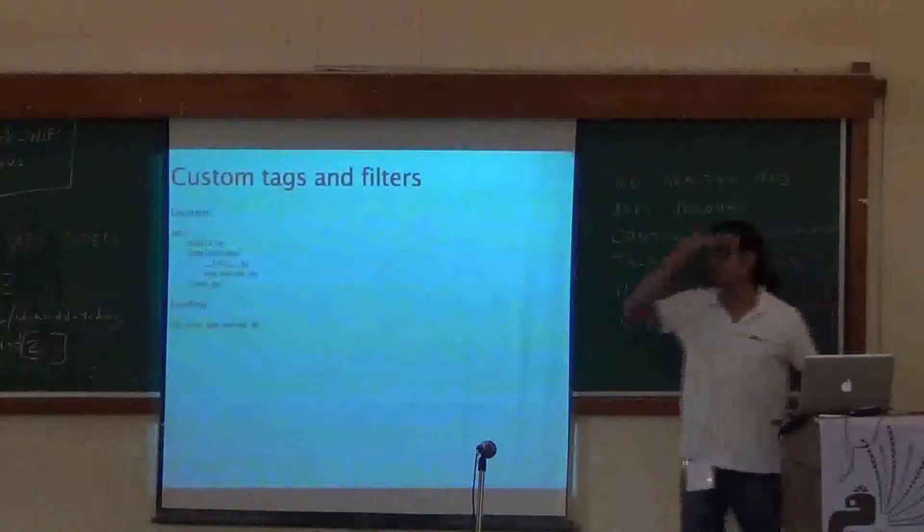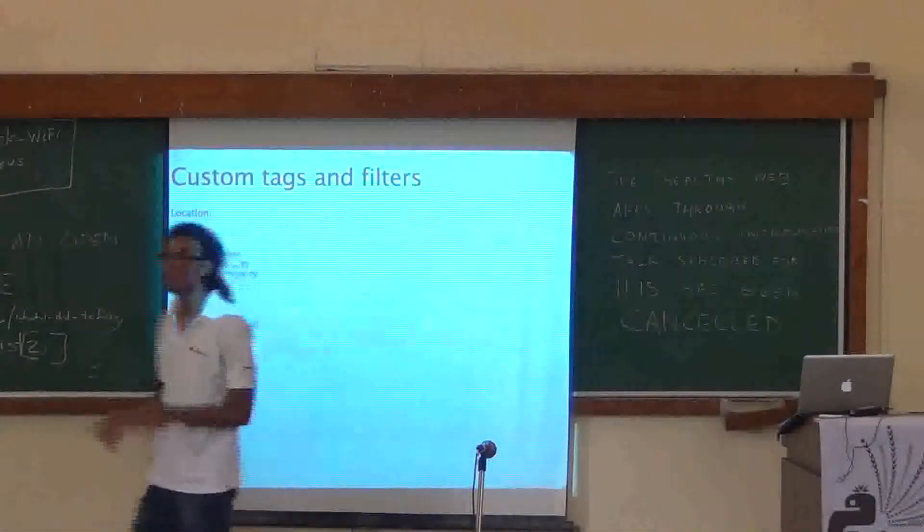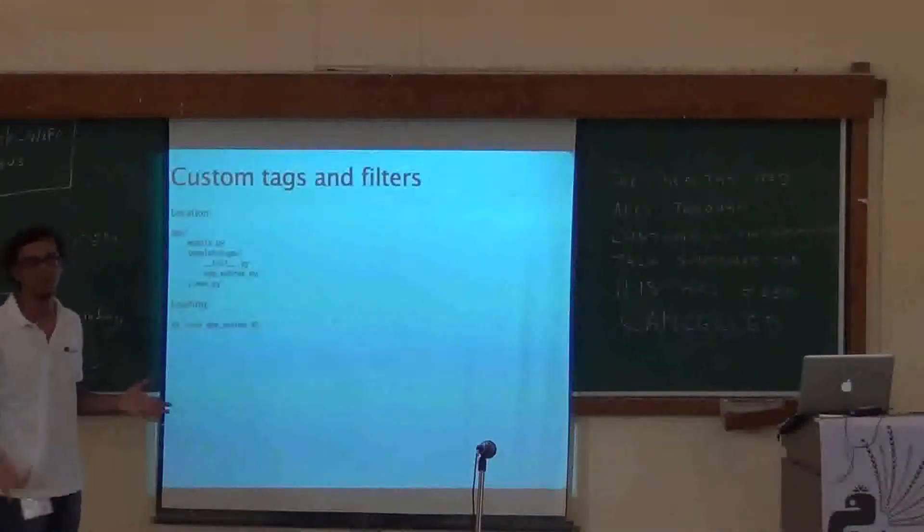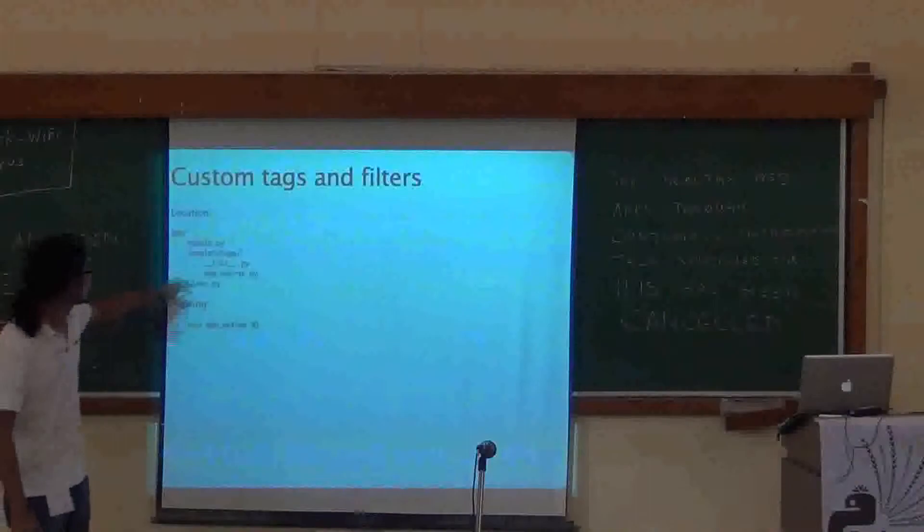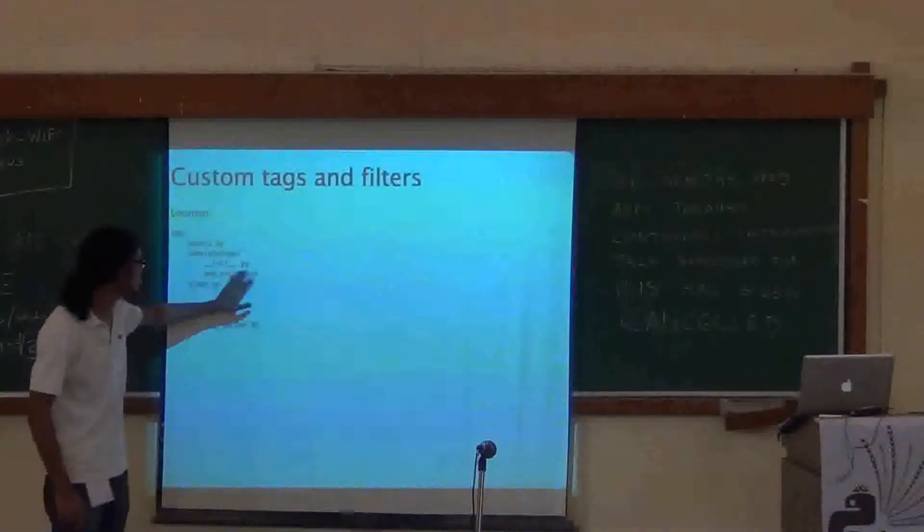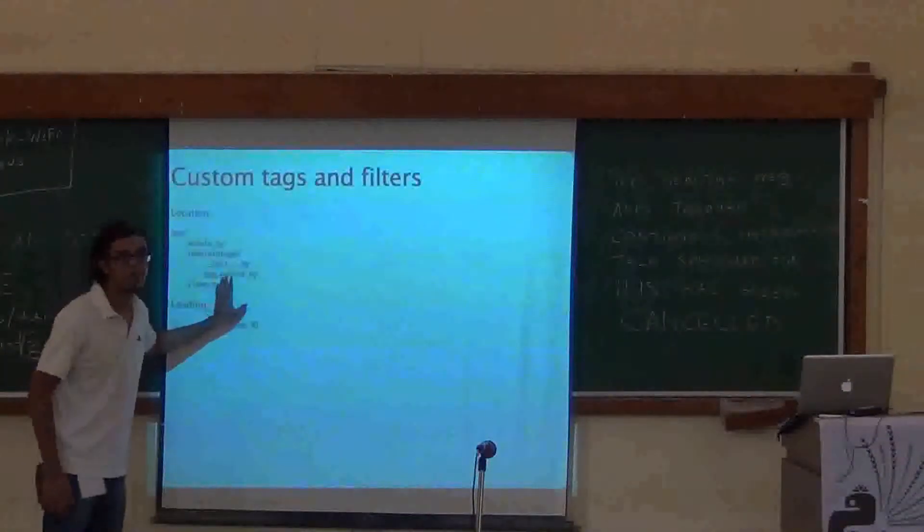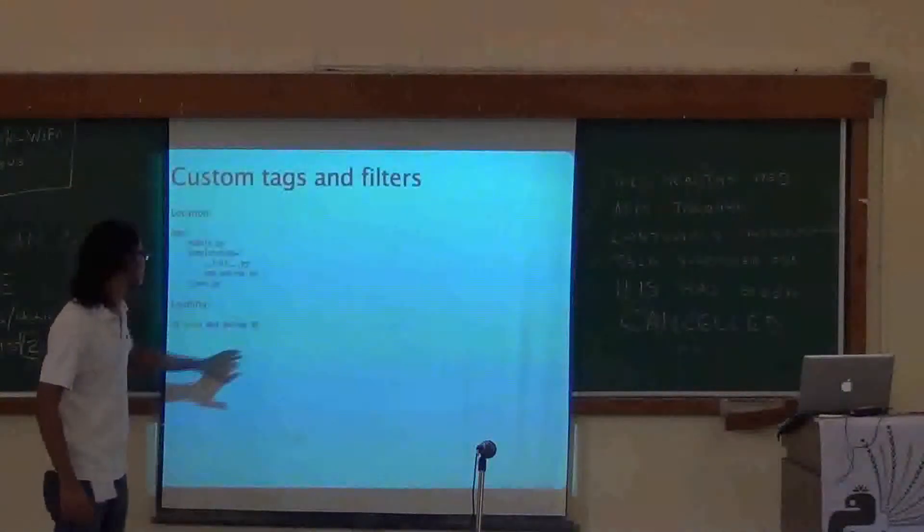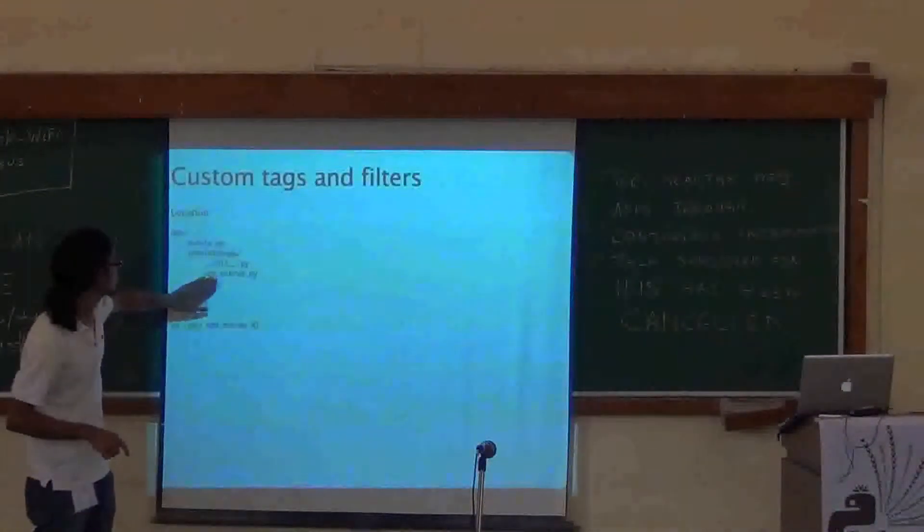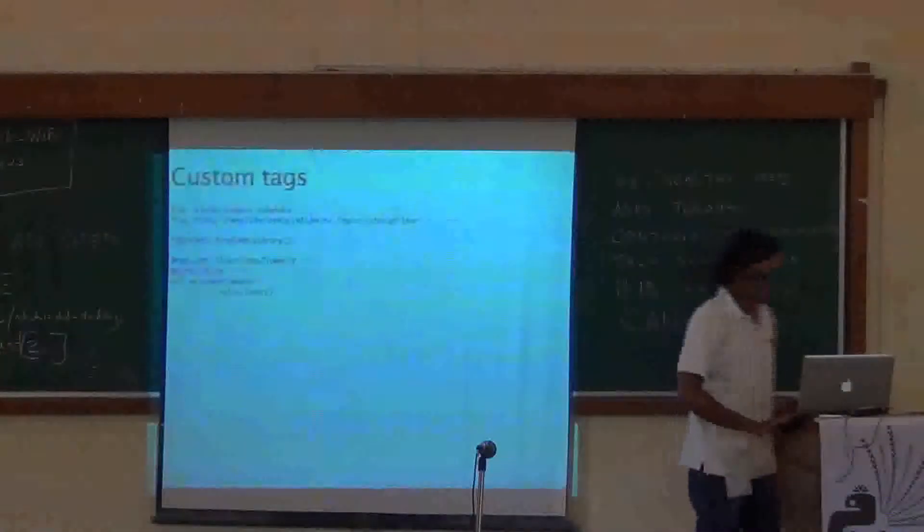So, this was all these times we were covering tags and filters provided by Django itself. We can, of course, write our own custom tags and filters. This is how we do it. So, inside your app, just make a new directory called template tags. Make an init.py, and I'll write a file called app extras. And then, I have to load app extras inside my template. So, whatever tags and filters are defined inside this, will get loaded into the template. And then we can use that.